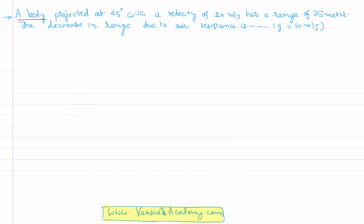A body is projected at an angle of 45 degrees with a velocity of 20 meters per second and has a range of 35 meters. We need to calculate the decrease in its range due to air resistance, assuming that acceleration due to gravity g = 10 meters per second squared.